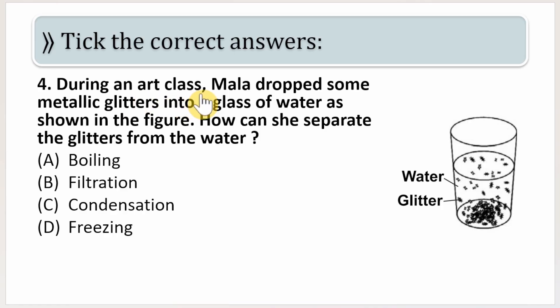Question number four: during an art class, Mala dropped some metallic glitter into a glass of water as shown in the figure. So figure is over here. How can she separate the glitter from the water?